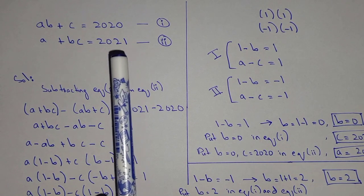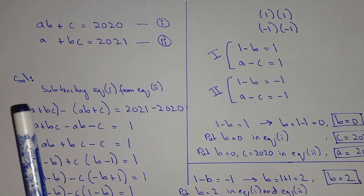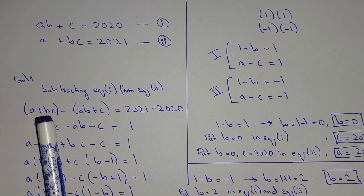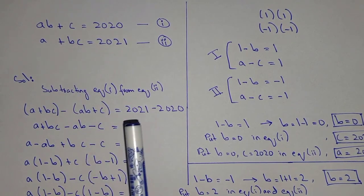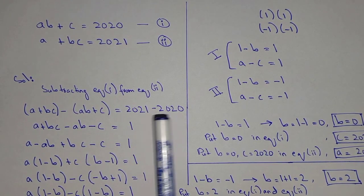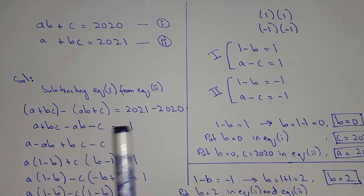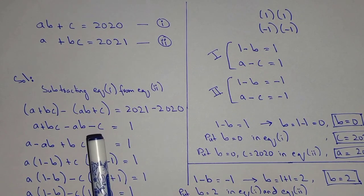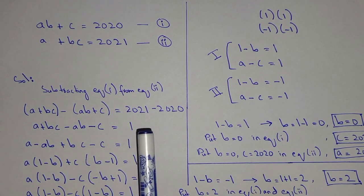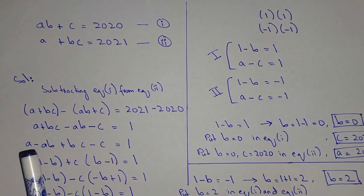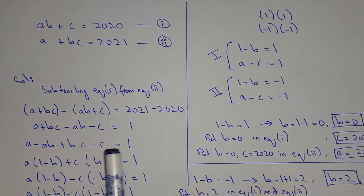We are subtracting equation 1 from equation 2. So here we have A plus BC minus AB plus C equal to 2021 minus 2020. We are left with A plus BC minus AB minus C equal to 1. So A minus AB plus BC minus C equals 1.